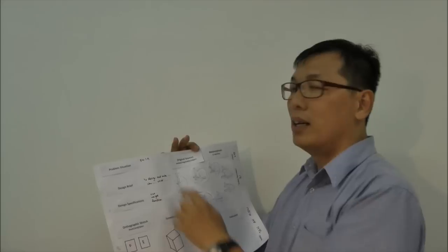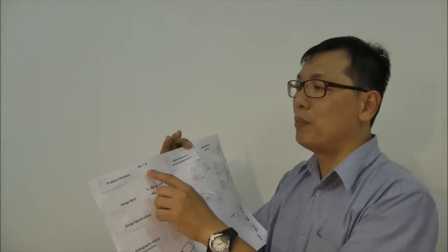Start here. What I wrote here is the 5W and 1H design brief: basically to design and make something for who and for what. Design specifications include things like the size, the weight, the function, and the rest.